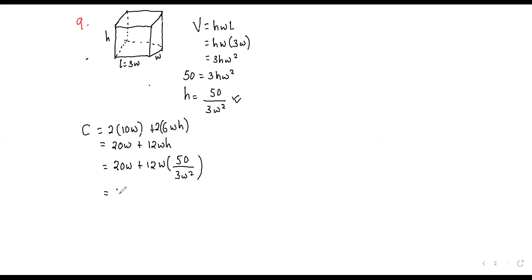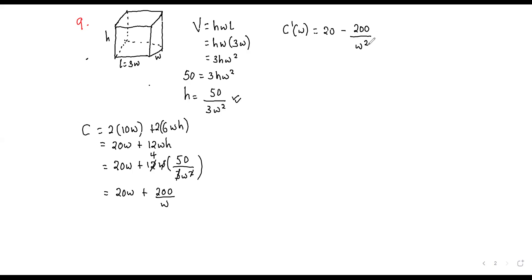That gives us: 20W² + 200/W. These 3 can go into 50 four times to give 200, and the W squared in numerator and denominator cancel leaving 200/W. So cost C = 20W² + 200/W. Now we differentiate the cost function with respect to W. We get 20 − 200/W². You can write 200/W as 200W⁻¹ so differentiating gives −200W⁻², which is −200/W².